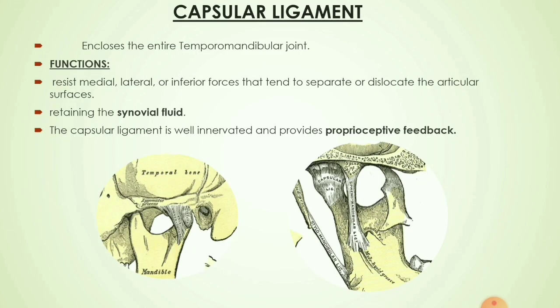The capsular ligament encloses the entire TMJ. Its functions are: it resists medial, lateral, or inferior forces that tend to separate or dislocate the articular surfaces; it retains the synovial fluid as it is lined from within by the synovial membrane, helping in lubrication; and being well innervated, it provides proprioceptive feedback to the joint.